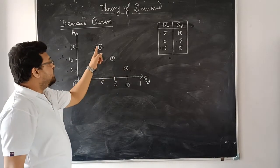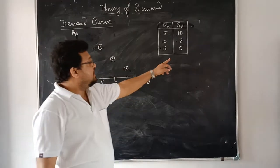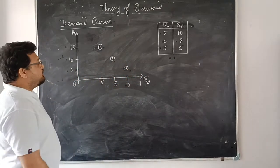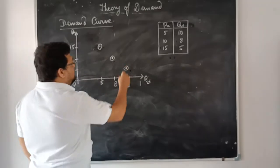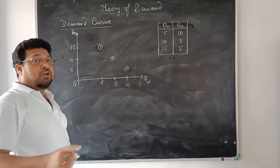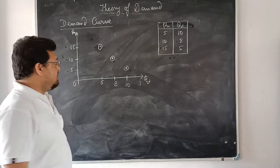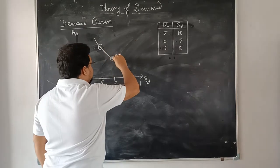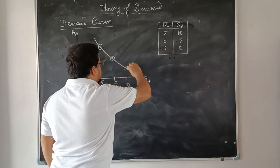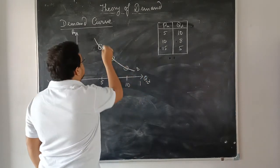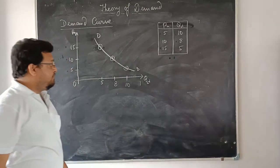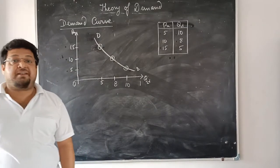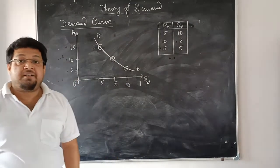We get these points when we map this table in a graph. When you join these points — the locus of the combinations — you get what is known as a downward-sloping demand curve. When you join these points, you get an individual demand curve.